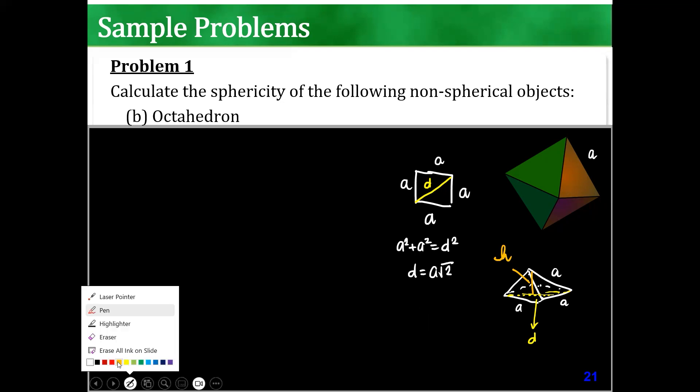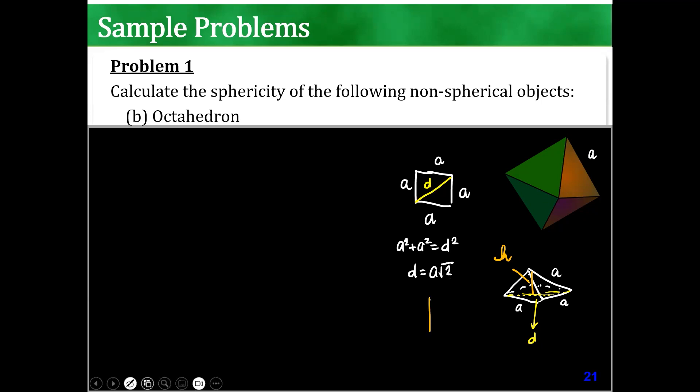Now, if I want to solve for the height, because I need to get the volume and surface area. Height, this, and the white. I know that the white is a, the d, the diagonal, I'll divide that into 2 because it's just half. a root 2 over 2. Therefore, the height that I'm solving for is what? Height squared is a squared minus a squared over 2. It's a squared over 2. Right? Therefore, h is a square root of 2 over 2. Can you follow, guys?